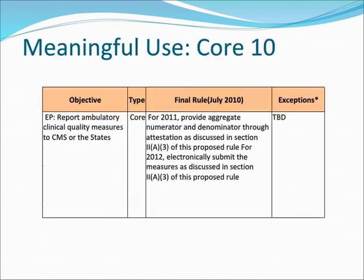Meaningful Use Core 10, Final Rule: For 2011, provide aggregate numerator and denominator through attestation as discussed in section 2A.3 of the proposed rule. Exception: To be determined.